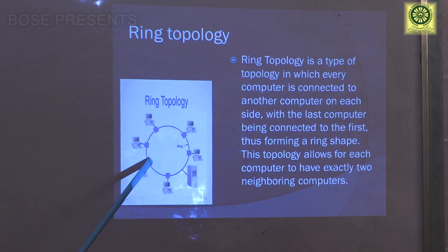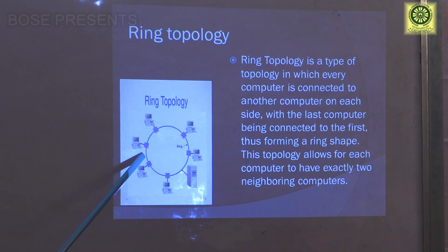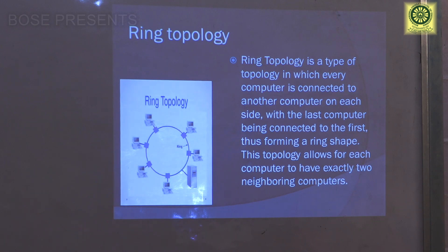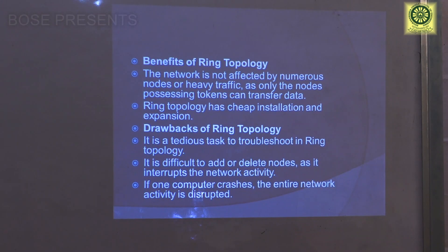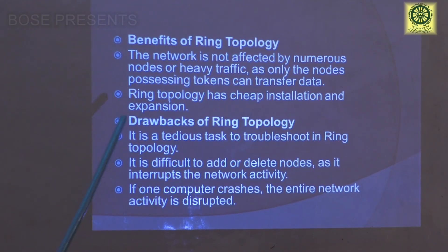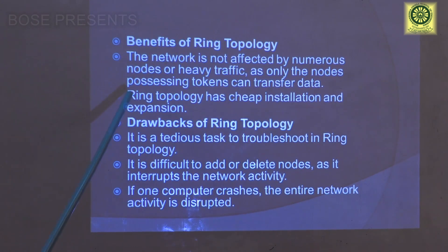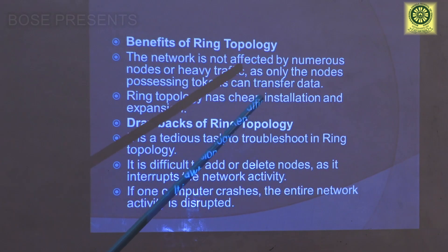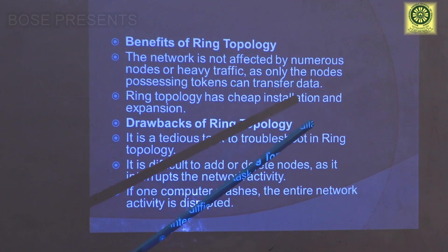If the destination is a particular point, then data transfers from one node and continuously transmits through the ring, forming a ring transmission of data. Coming to the benefits of ring topology: whenever nodes are connected in heavy traffic, nodes passing tokens cannot launch the data. Ring topology has cheap installation and expansion and needs less cabling.